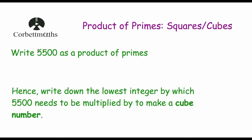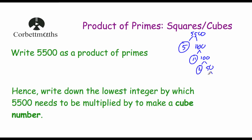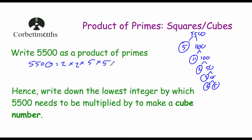Our last question: write 5,500 as a product of primes. 5,500 is 5 times 1,100; circle the 5. 1,100 is 11 times 100; circle the 11. 100 is 2 times 50; circle the 2. 50 is 2 times 25; circle the 2. 25 is 5 times 5. So 5,500 as a product of primes is 2 times 2 times 5 times 5 times 5 times 5 times 11, which in index form is 2 squared times 5 to the power of 3 times 11 to the power of 1.